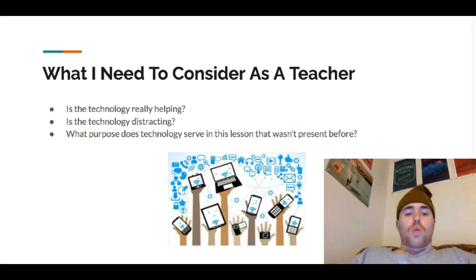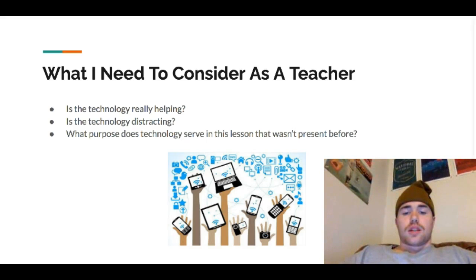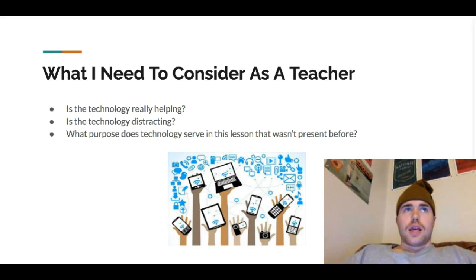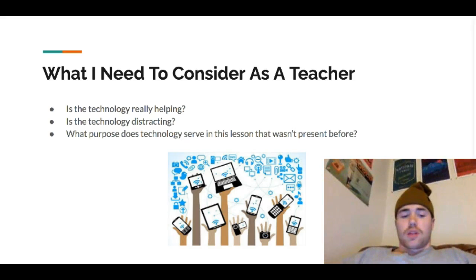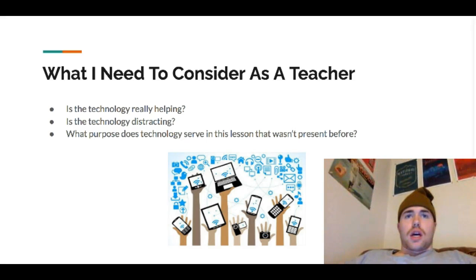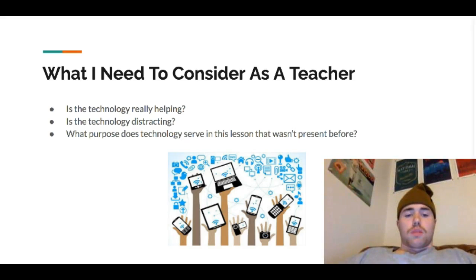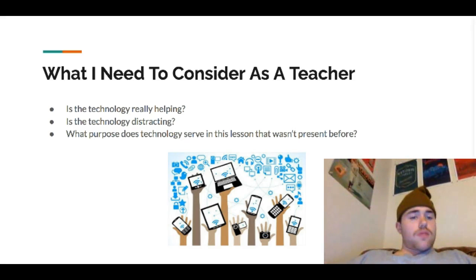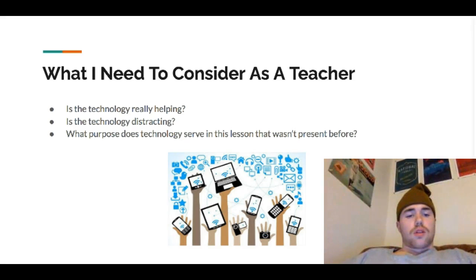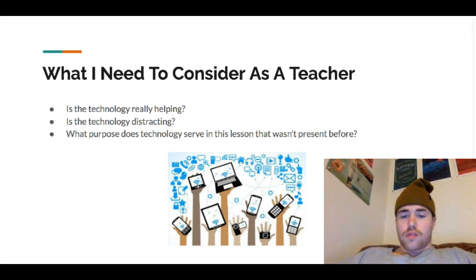And lastly, what I want to consider is: what purpose does the technology serve in this lesson that wasn't present before? The main question I want to ask is how does this technology help the kids — is it going to be beneficial to use this over not using it? I think that's the main question everybody should ask, because the main goal is teaching the kids as best we can and giving them the best education possible. Knowing the purpose of what we're doing is absolutely key. So this has been the RAT framework. It's a very simple framework, but I think it's one that everybody can learn from, and it's definitely something I'm going to use in my future as a teacher.